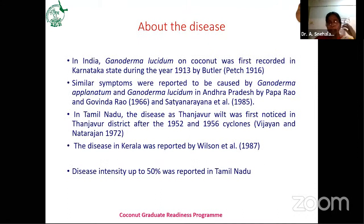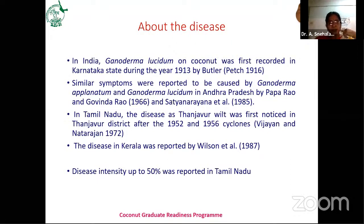In India, the disease was first reported to be caused by Ganoderma lucidum in Karnataka state during the year 1913 by Butler. Similar symptoms were also reported to be caused by both G. aplanatum and G. lucidum in Andhra Pradesh by Paparav and Govindarav and Sachnarendra et al. In Tamil Nadu, the Tanjavur wilt was first noticed after the 1952 and 1956 cyclones, and the highest disease intensity of up to 50% was reported in Tamil Nadu.